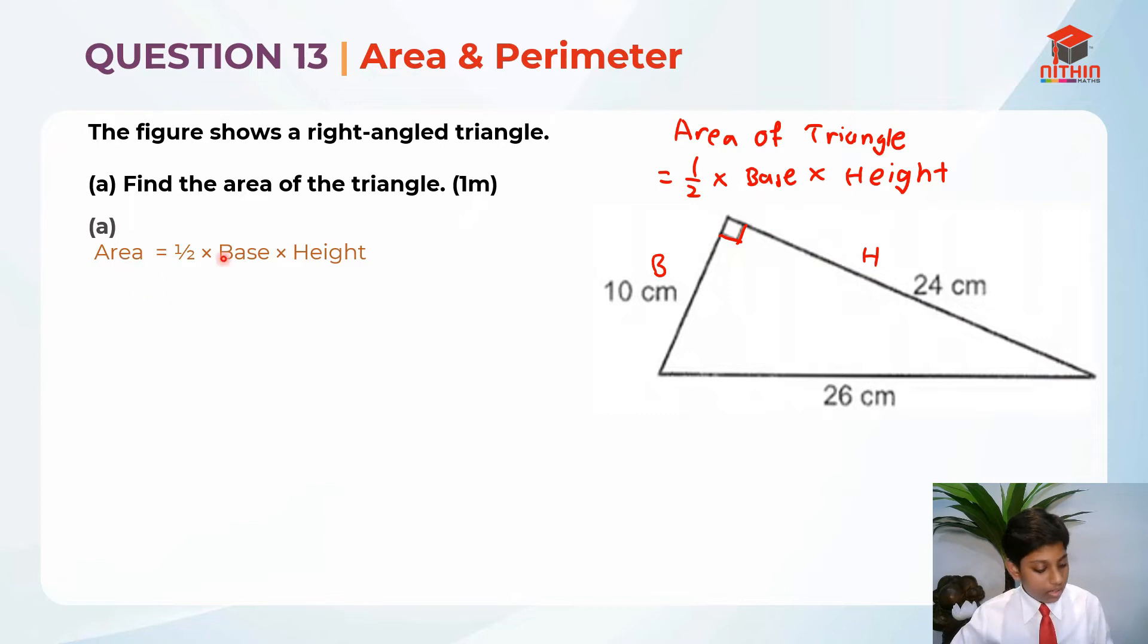Half times base times height, half times 10 times 24. So the base is 10 cm and the height is 24 cm. Half times 10 times 24 will give us 120 cm squared. So this is the answer for part A. Let's move on to part B.